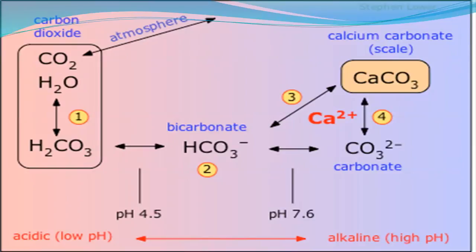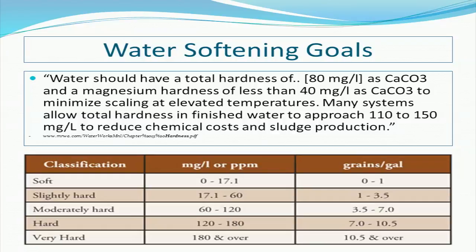We use these same principles when treating water hardness. By increasing the pH of the water, calcium ions are able to precipitate out as insoluble calcium carbonate. The overall goal of treatment, termed water softening, is to reduce the total hardness of a source water to less than 80 milligrams per liter as calcium carbonate, and reduce magnesium hardness to less than 40 milligrams per liter as calcium carbonate, to minimize scaling at elevated temperatures. In many cases, total hardness is allowed to approach 110 to 150 milligrams per liter as calcium carbonate. There are no set standards for treatment of hardness, as it is not technically a health hazard, but 80 milligrams per liter as calcium carbonate is considered to be a satisfactory hardness level for most consumers.